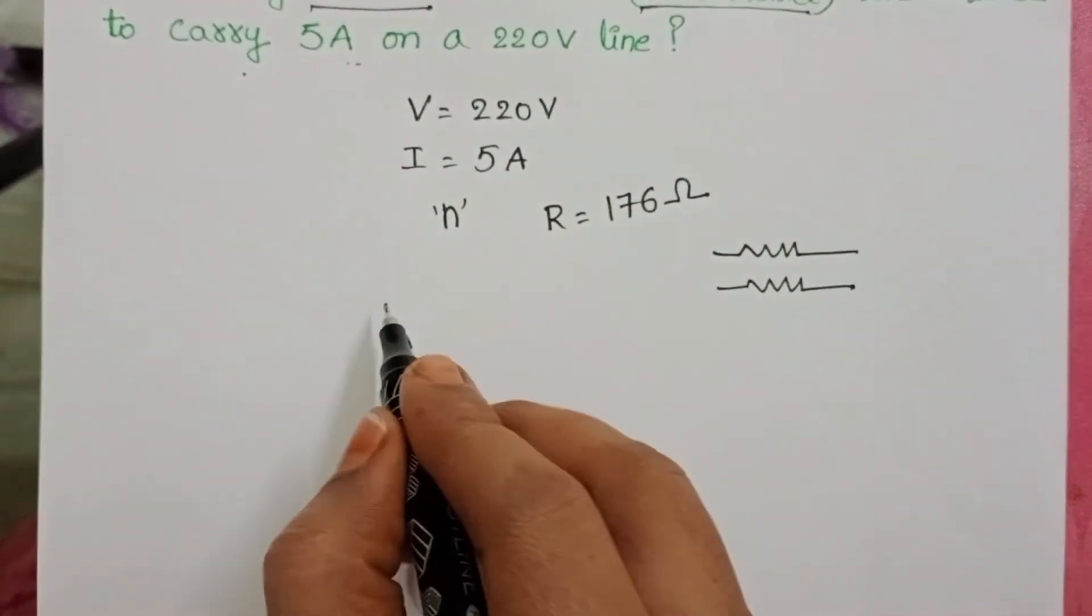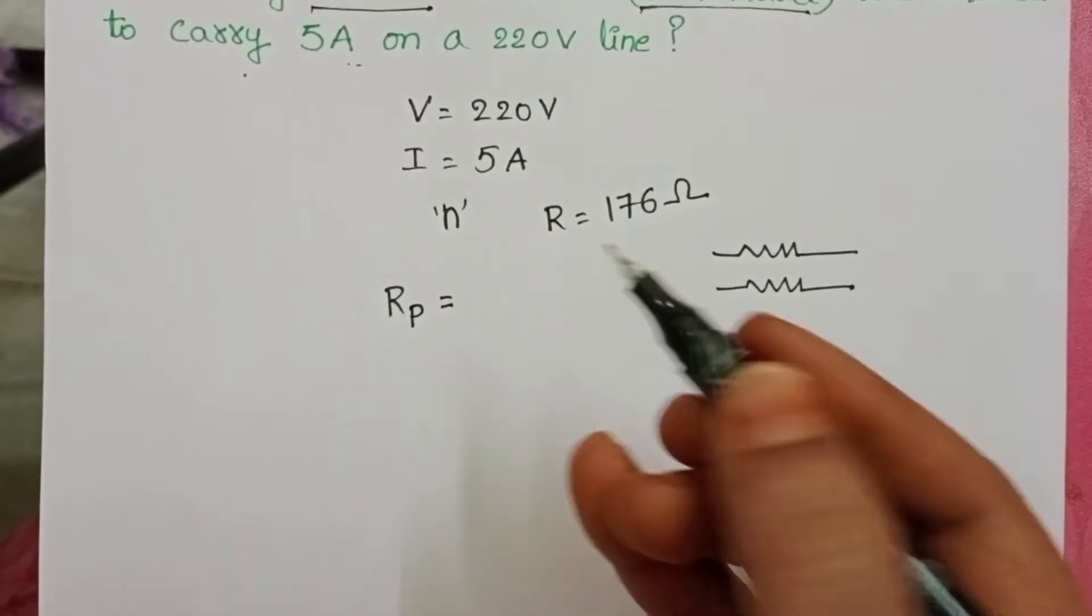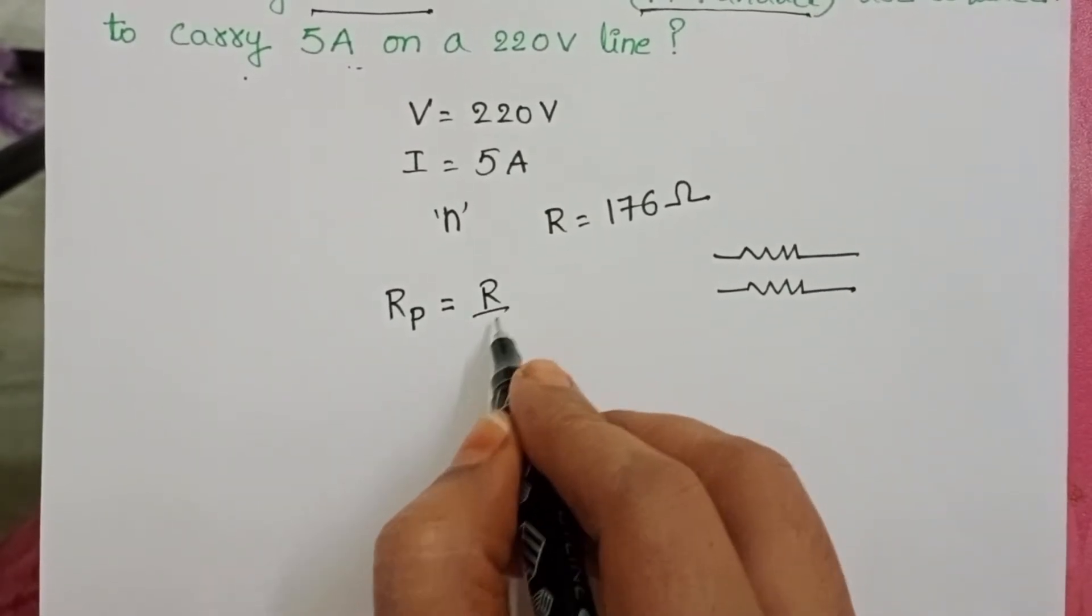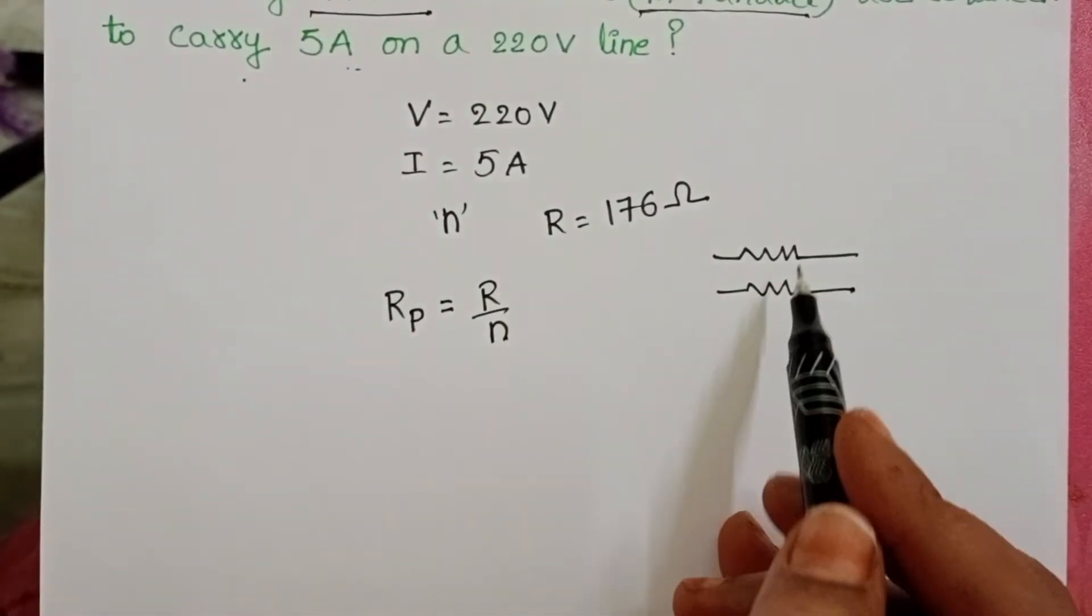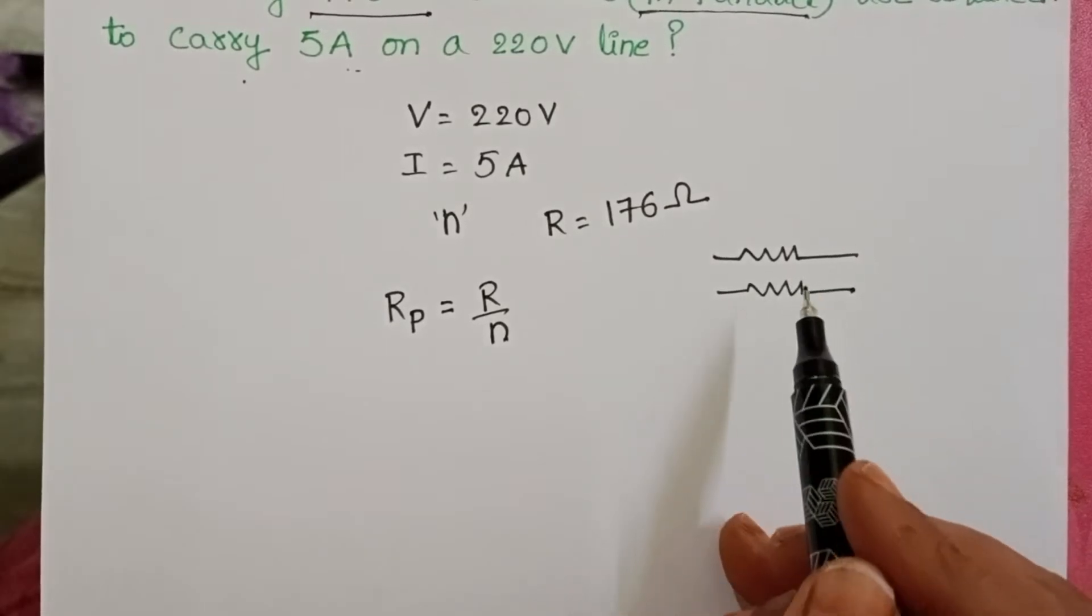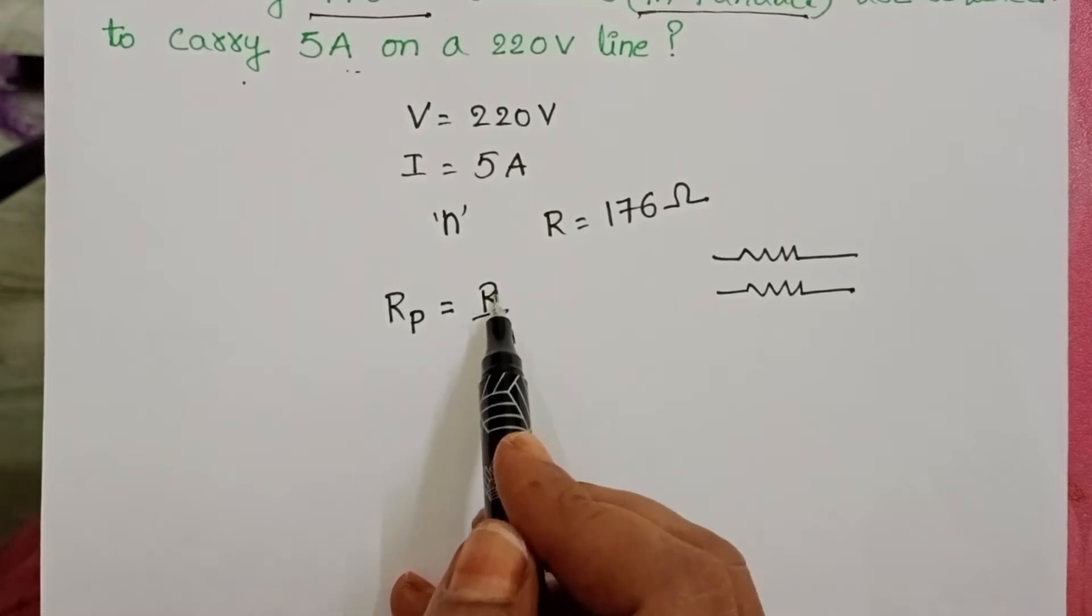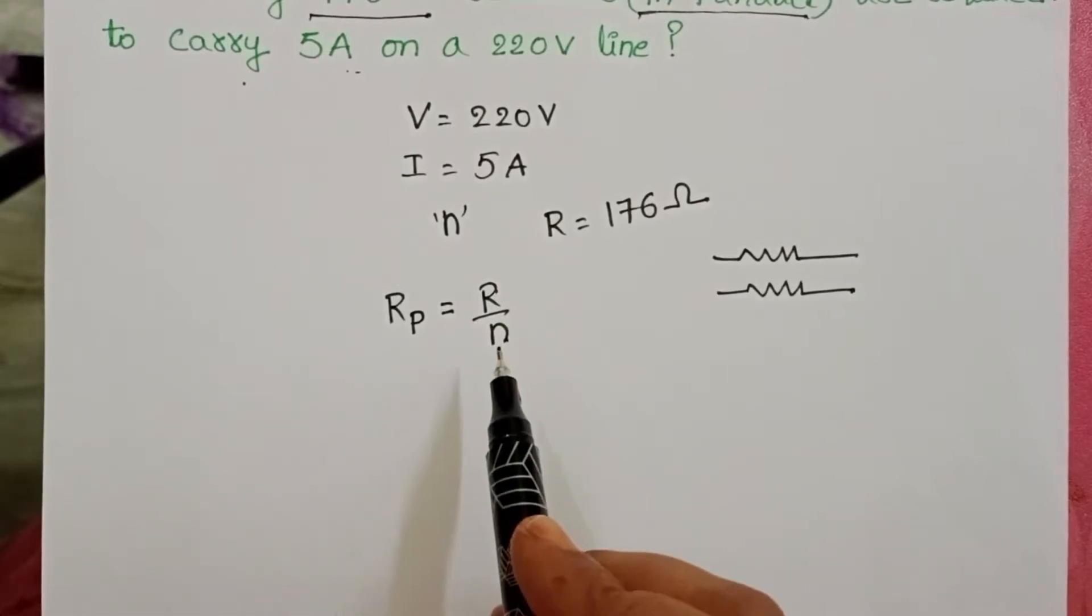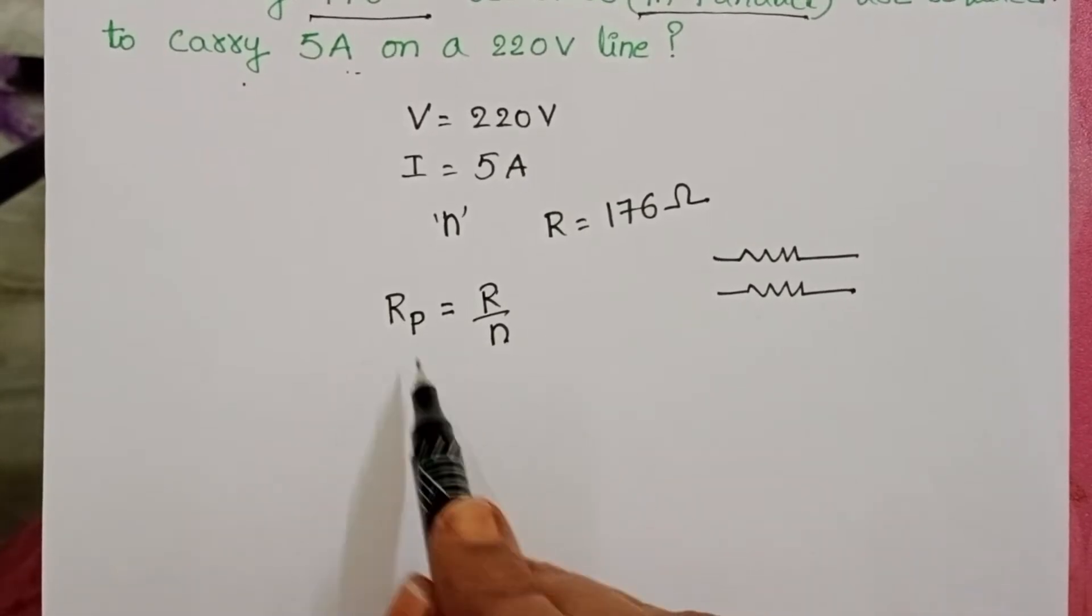When a number of resistors are connected in parallel, the formula to calculate the equivalent resistance is R by N. Remember this formula. When the resistance of each resistor is the same, then the equivalent resistance is R by N. This is only for parallel connection, not for series.